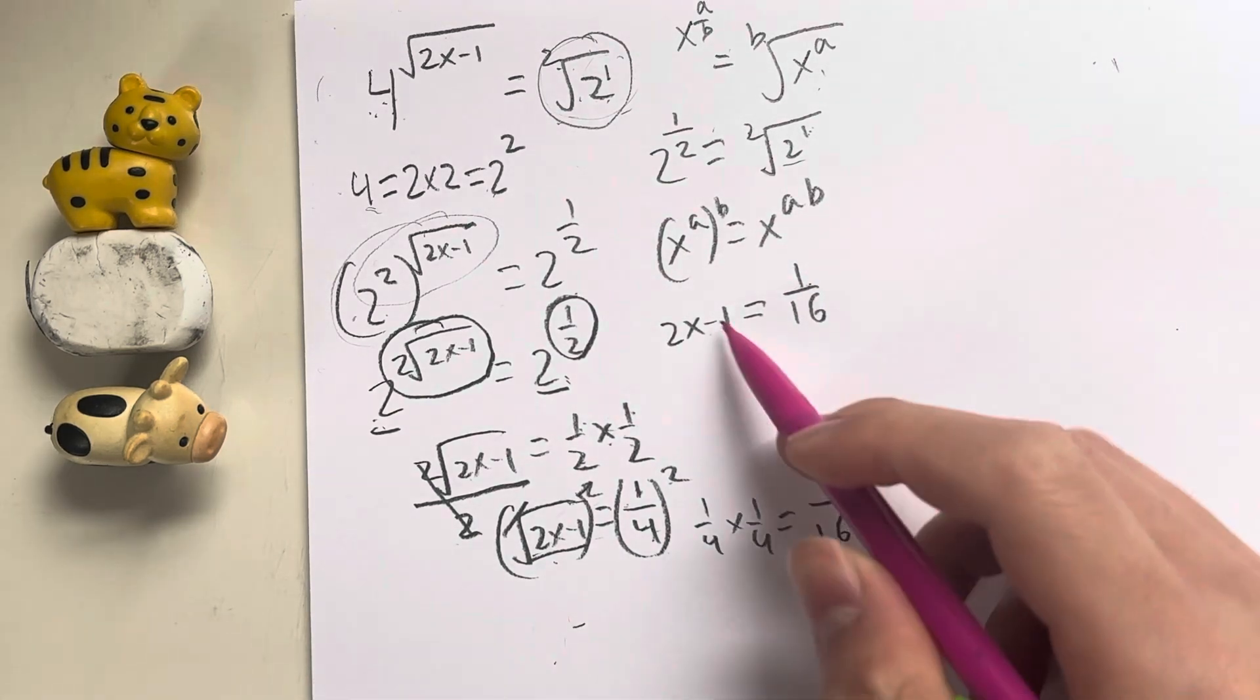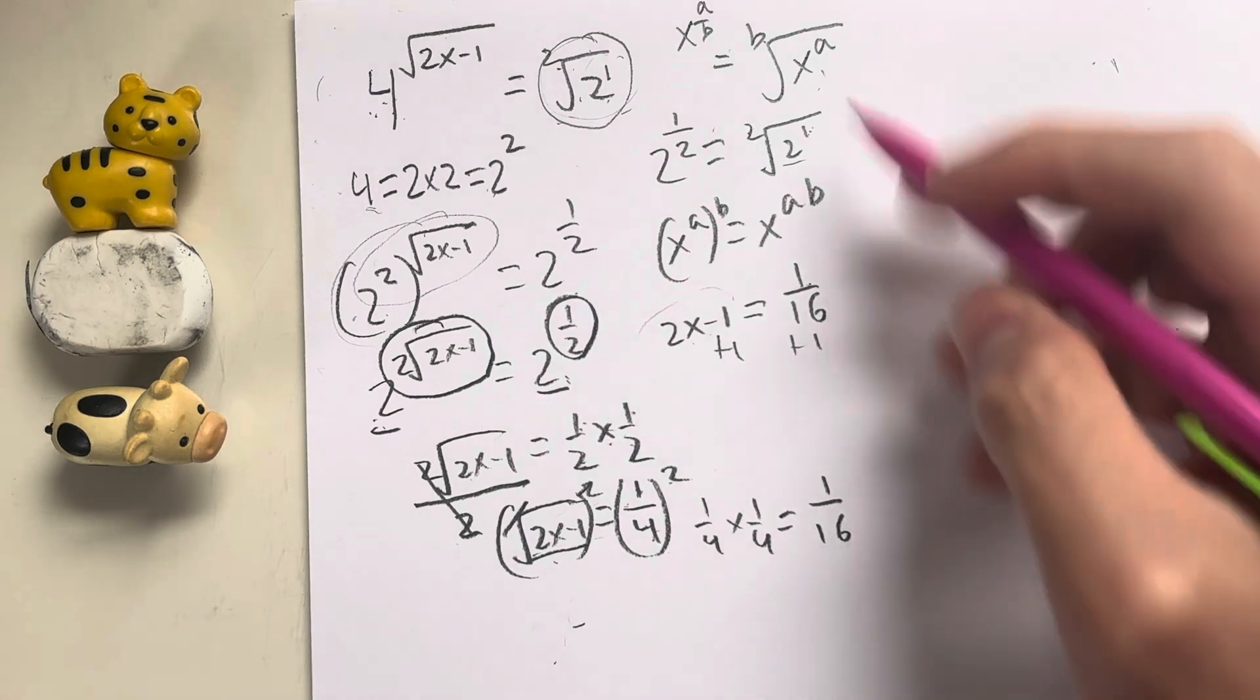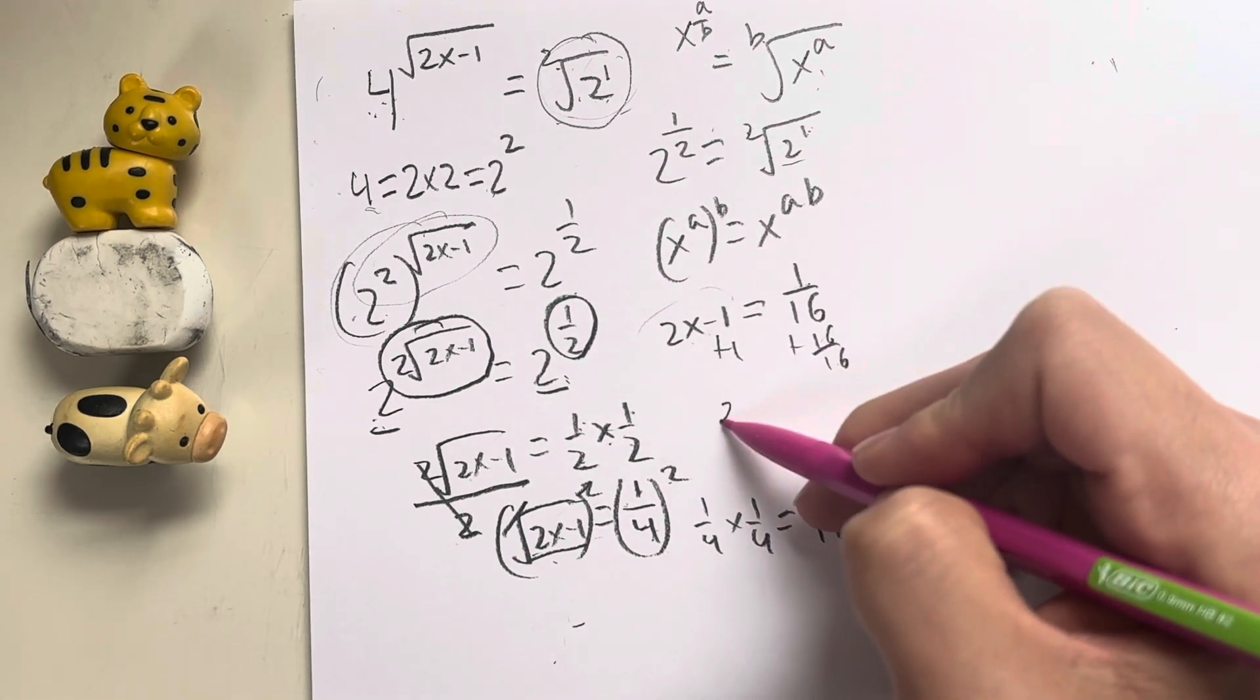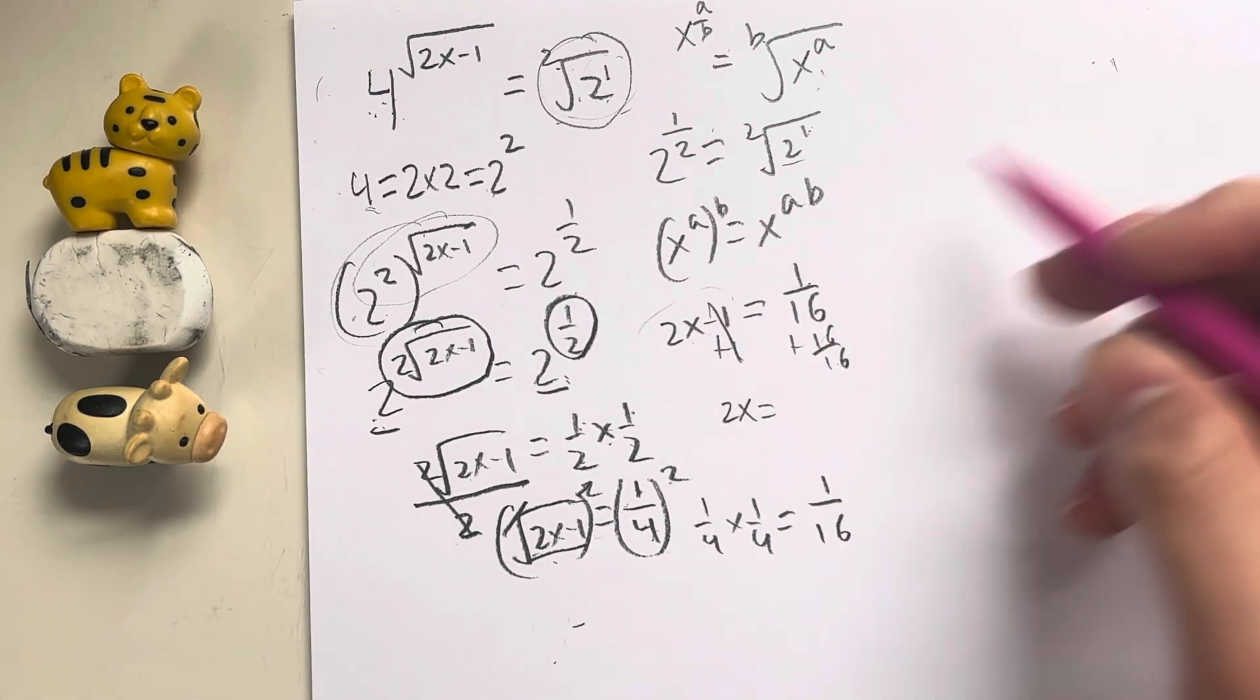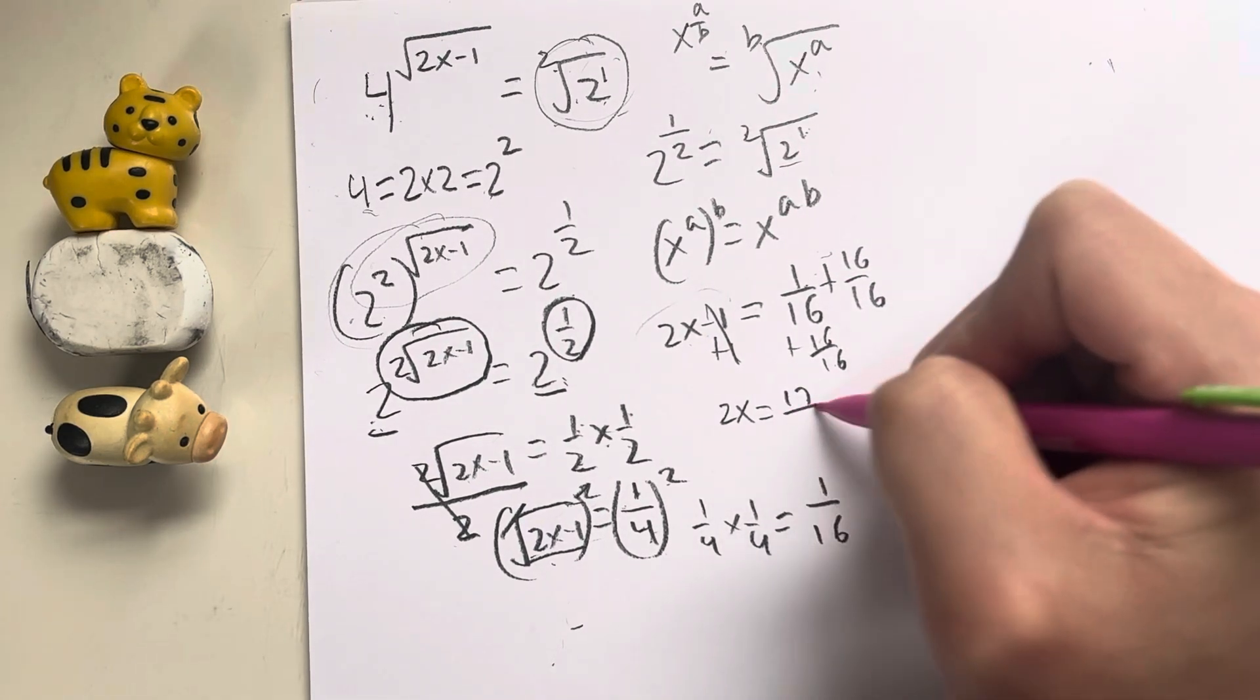And then, what I could do from here is solve this equation by adding 1 onto both sides. Adding 1 is the same as adding 16 over 16. This gives me 2x is equal to 1 over 16 plus 16 over 16, which is just equal to 17 over 16.